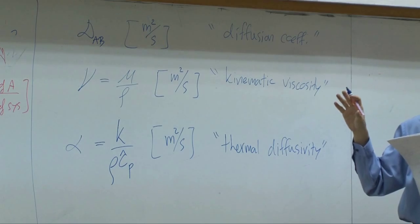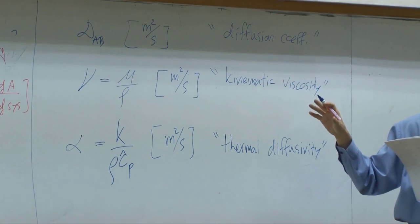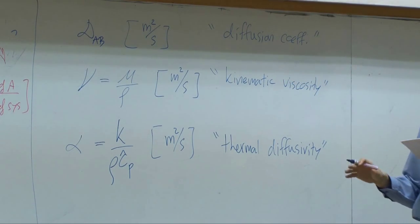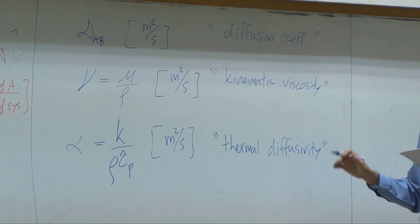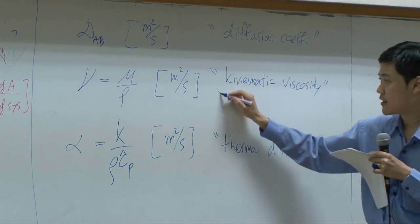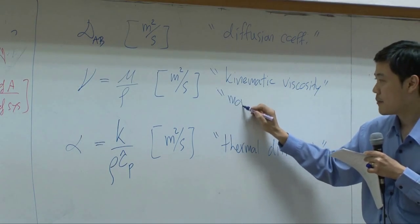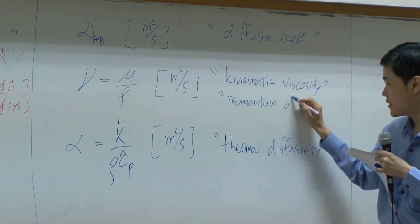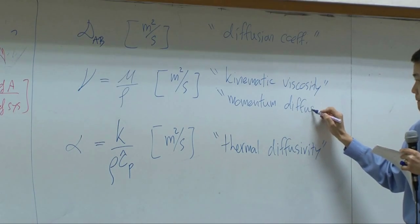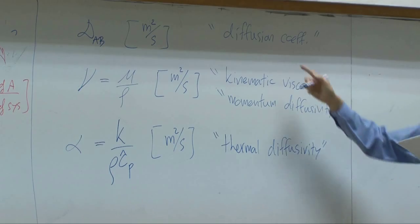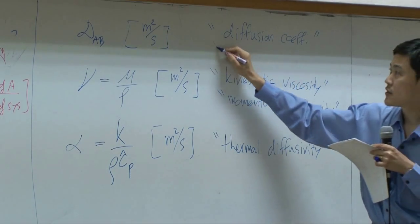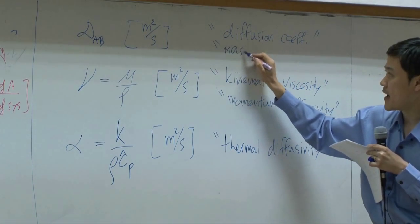Therefore, people thought that they are somewhat similar. So they renamed all of this to be similar. Kinematic viscosity sometimes is called momentum diffusivity, and diffusion coefficient sometimes is called mass diffusivity.